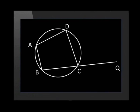In cyclic quad ABCD, BC has been extended to point Q, creating an exterior angle. If we let angle A be X, we then know that angle DCB will be 180 degrees minus X. But because BCQ is a straight line, the exterior angle at C must be X.